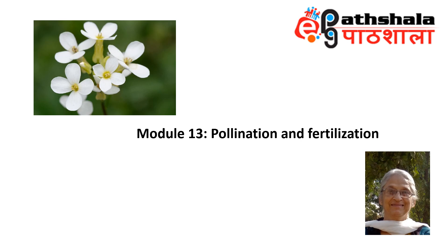The pollen germinates to form a pollen tube containing two sperm cells. The pollen tube grows through the style into the ovary and transfers the sperm cells to the egg cell and the central cell within the female gametophyte. A characteristic feature of angiosperms is double fertilization, in which the egg-sperm fusion forms the zygote and the central cell-sperm fusion forms the endosperm.